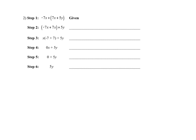All right, here we go — this is given. You're looking at what changed from step one to step two. We've got parentheses around 7x plus 5y, and then down here I changed the parentheses to go around negative 7x plus 7x — I changed the grouping. That's the associative property of addition.